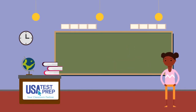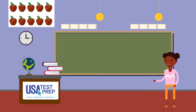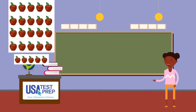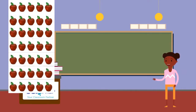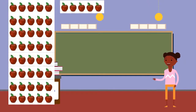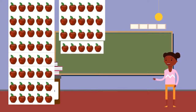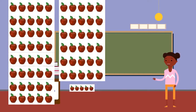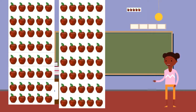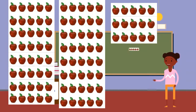Ready? Count. Five, ten, fifteen, twenty, twenty-five, thirty, thirty-five, forty, forty-five, fifty, fifty-five, sixty, sixty-five, seventy, seventy-five, eighty, eighty-five, ninety, ninety-five, one hundred.